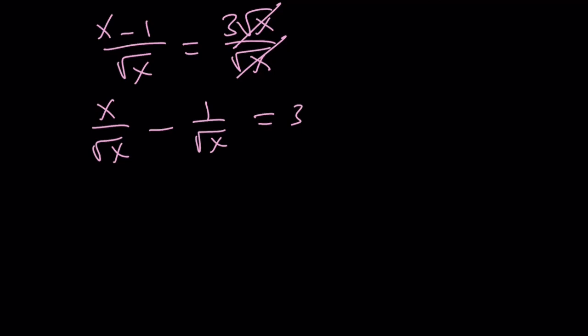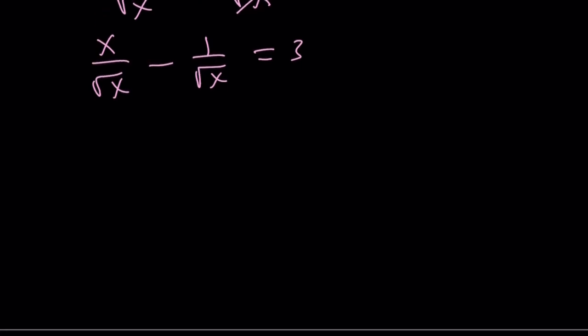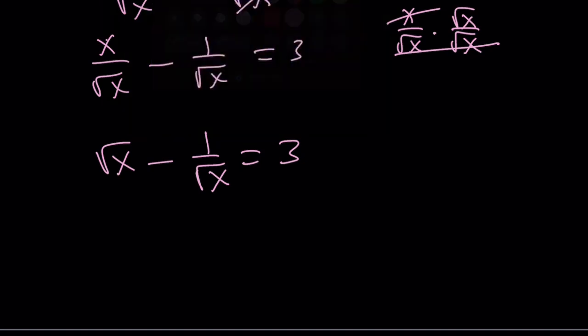But what is x divided by square root of x? If you don't know what it is, just multiply it by conjugates, and you're going to get x here, and you're going to end up with square root of x. So it's square root of x because you're dividing a number by its square root. So this is square root of x minus 1 over square root of x equals 3. What am I supposed to find? x squared plus 1 over x squared. Let's go ahead and square both sides.